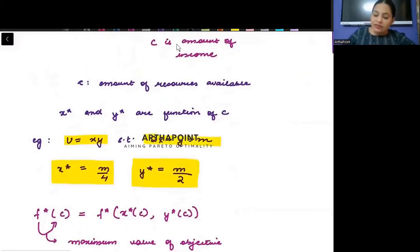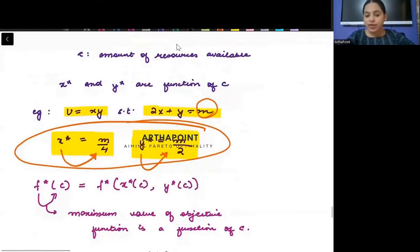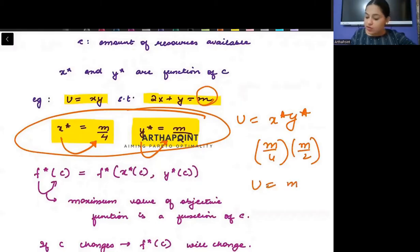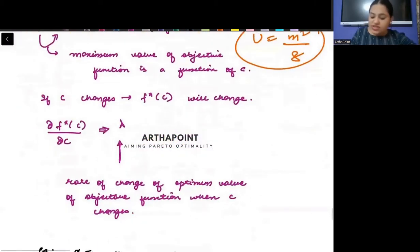Just say in my utility function, when we solved it, we were getting X* as M by 4 and Y* as M by 2. So this X*, Y* was getting affected by the level of the resource that I have. And because utility will be nothing at optima, utility will be X* into Y*. So as I am going to put this M by 4 and M by 2, my utility will also be affected by this. My utility will also be affected by the amount of resources. So as the value of C will change, F*(C) will also change.